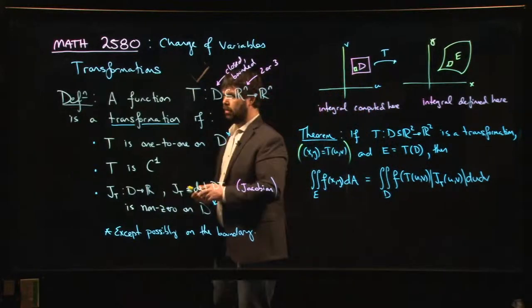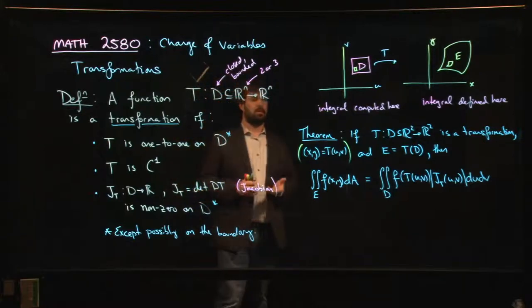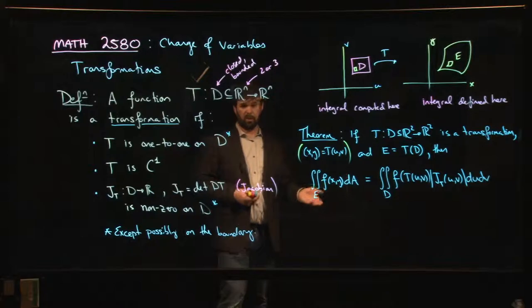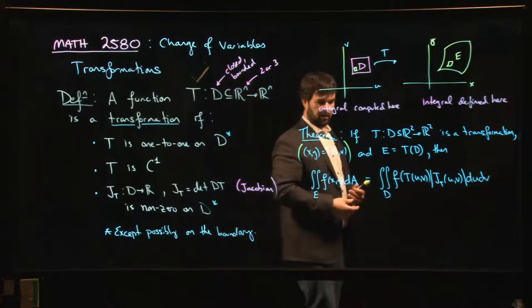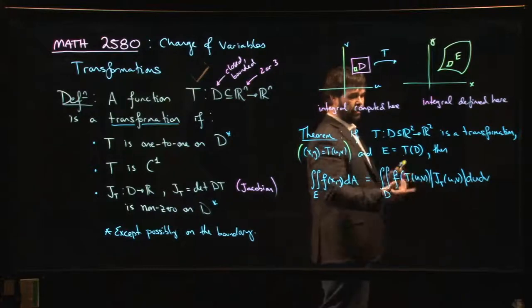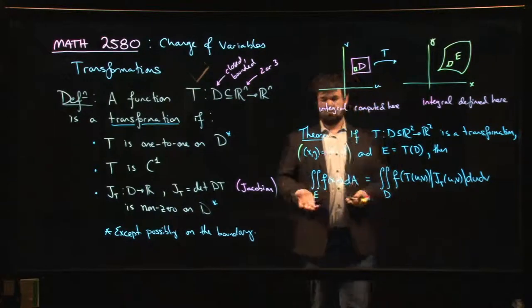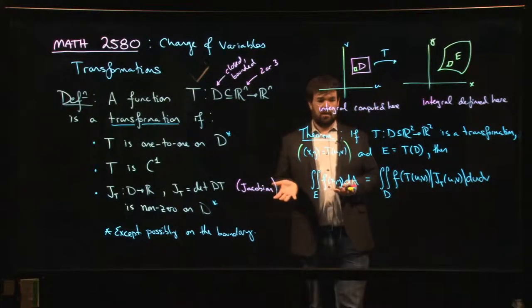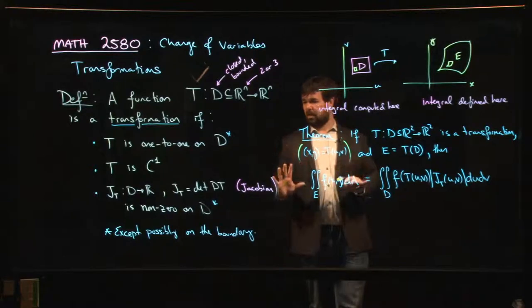So that's what the change of variables formula looks like for a general transformation going from R² to R². If this was R³ to R³, well, then this is now a triple integral. This is X, Y, Z. This is U, V, W. Otherwise, it looks the same, okay? That's the theorem.